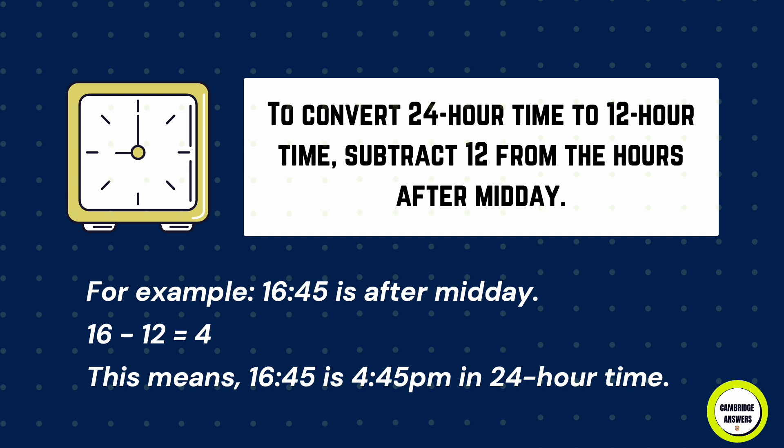To convert 24-hour time to 12-hour time, subtract 12 from the hours after midday. For example, 16:45 minus 12 equals 4:45, so 16:45 in 24-hour time is 4:45 p.m.